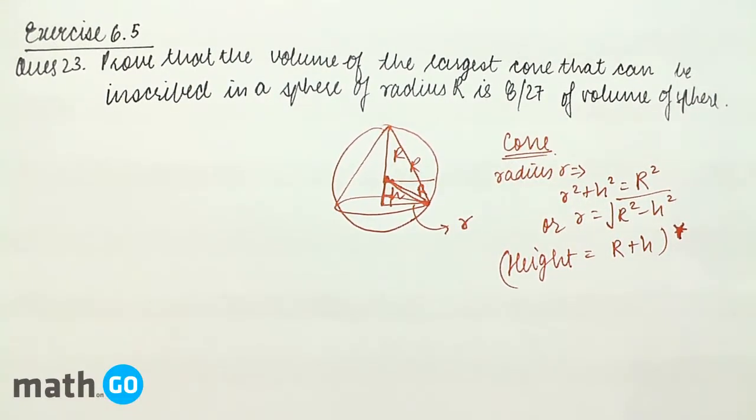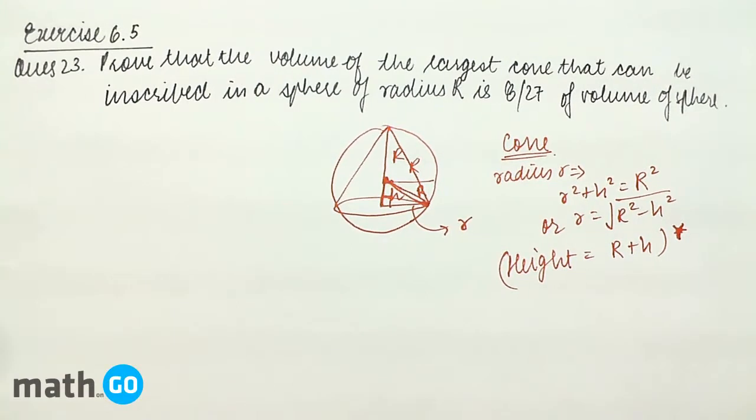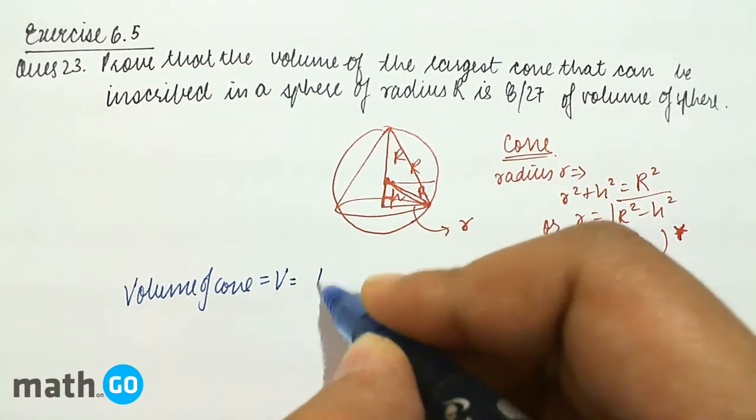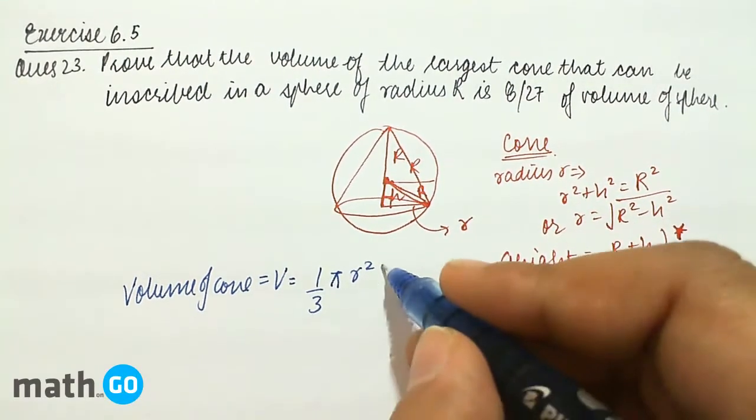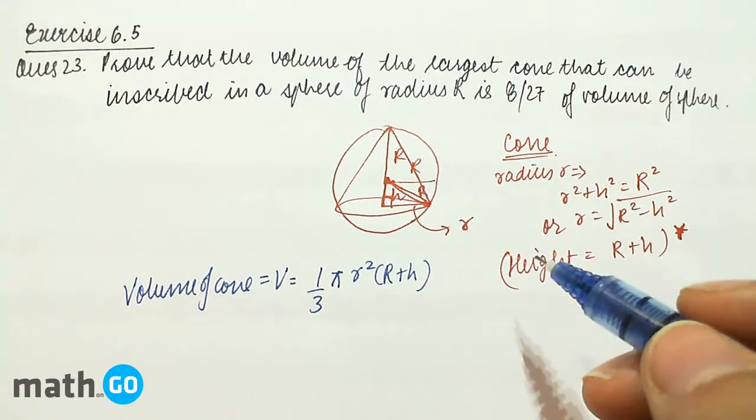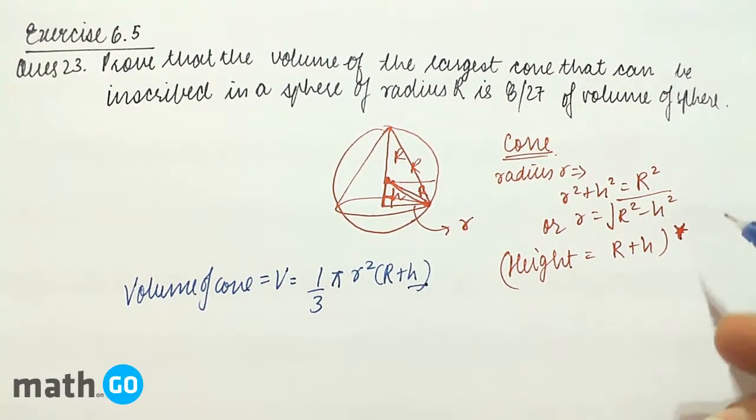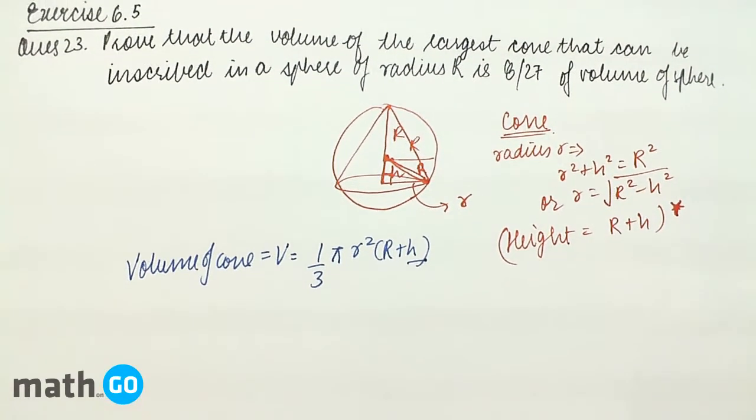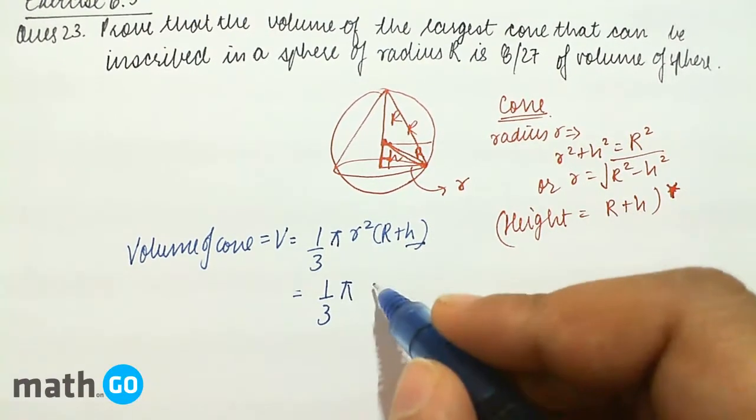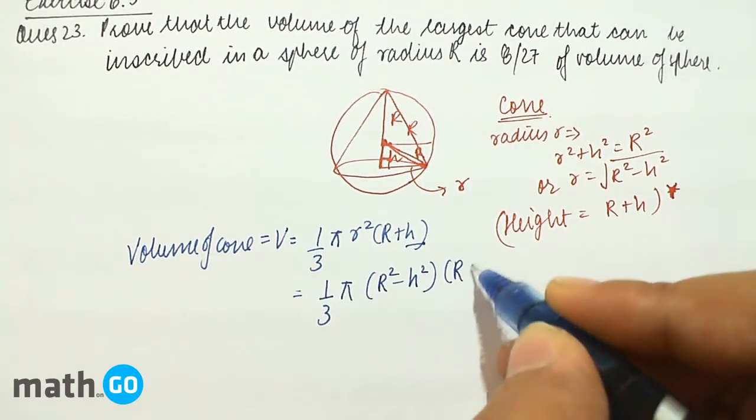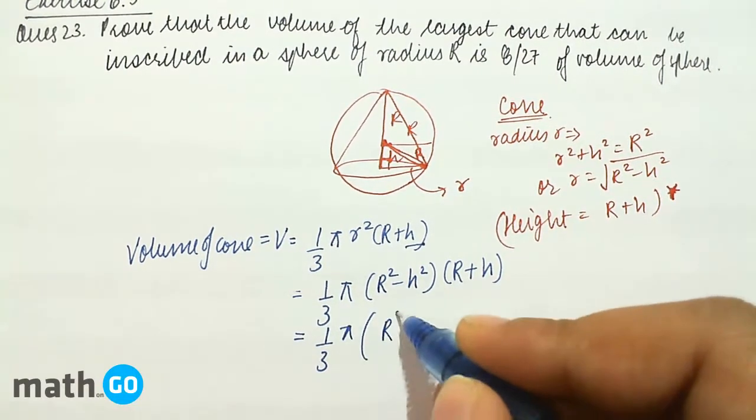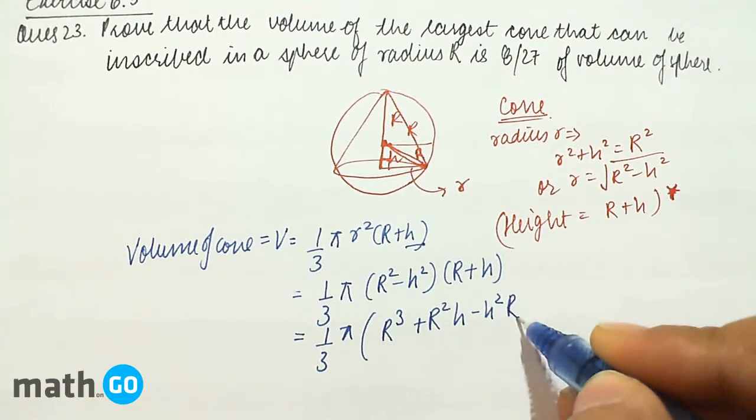So let us find out the volume. The volume of the cone is, let us take it as V. This is equal to 1/3 π r² into the height that is R plus h. Now, we either substitute r from this or h. But the thing to see here is if we substitute h, it will come in terms of root, but r² will have no problem, and our calculations will be much easier and fast. Therefore, r² can be written as R² minus h² into R plus h. This can be written as simple multiplication: R³ + R²h - h²R - h³.